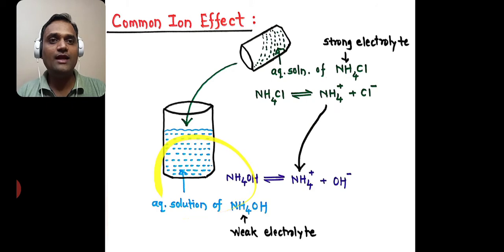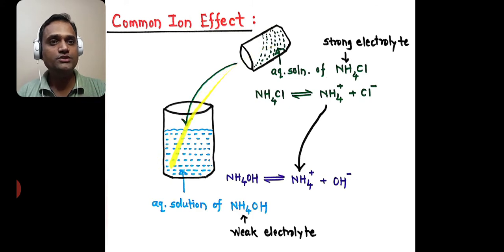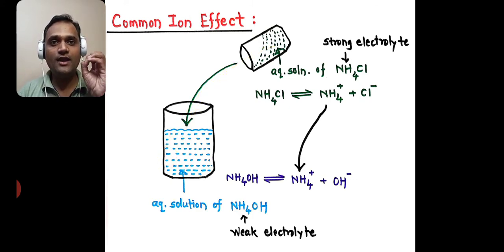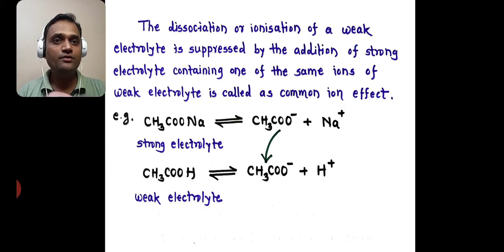In this case, the aqueous solution of NH4OH is our weak electrolyte. Ammonium chloride is our strong electrolyte. We added its aqueous solution into our original solution, and it provided us NH4+, which is our common ion. Due to this, the ionization of ammonium hydroxide is suppressed.